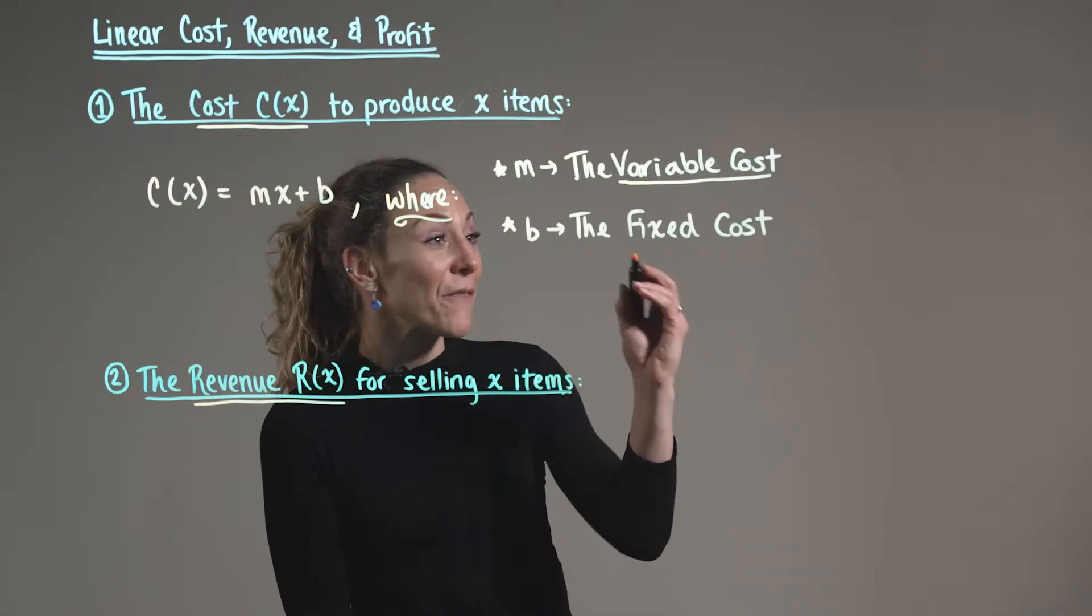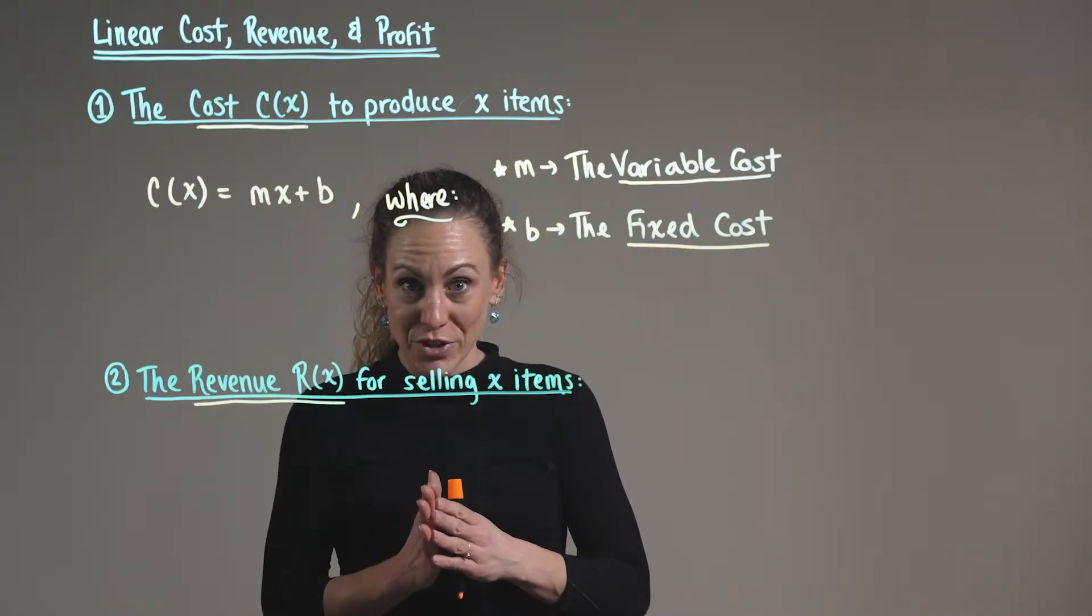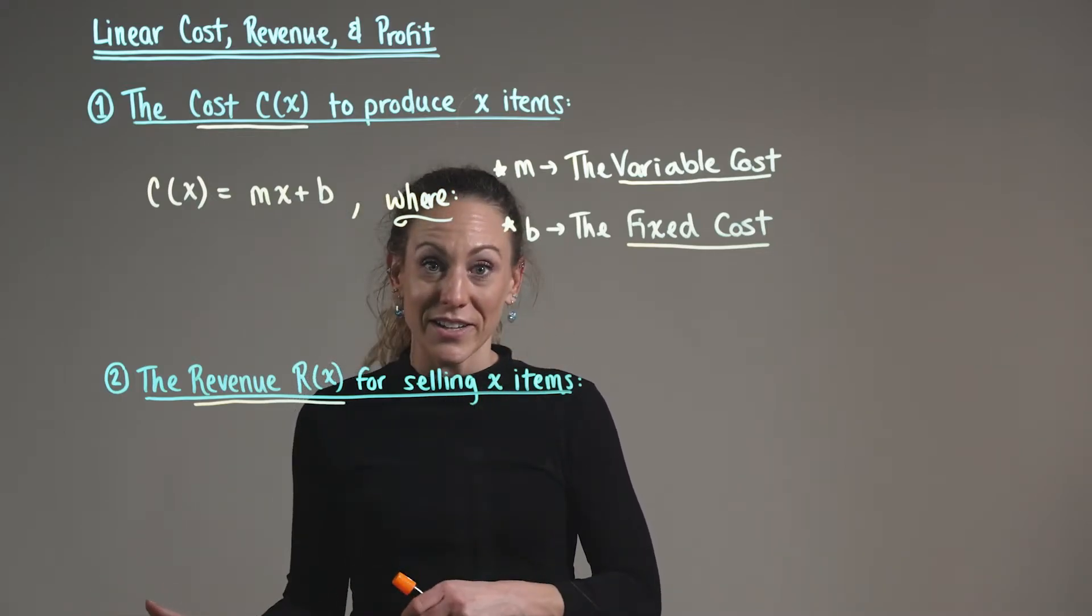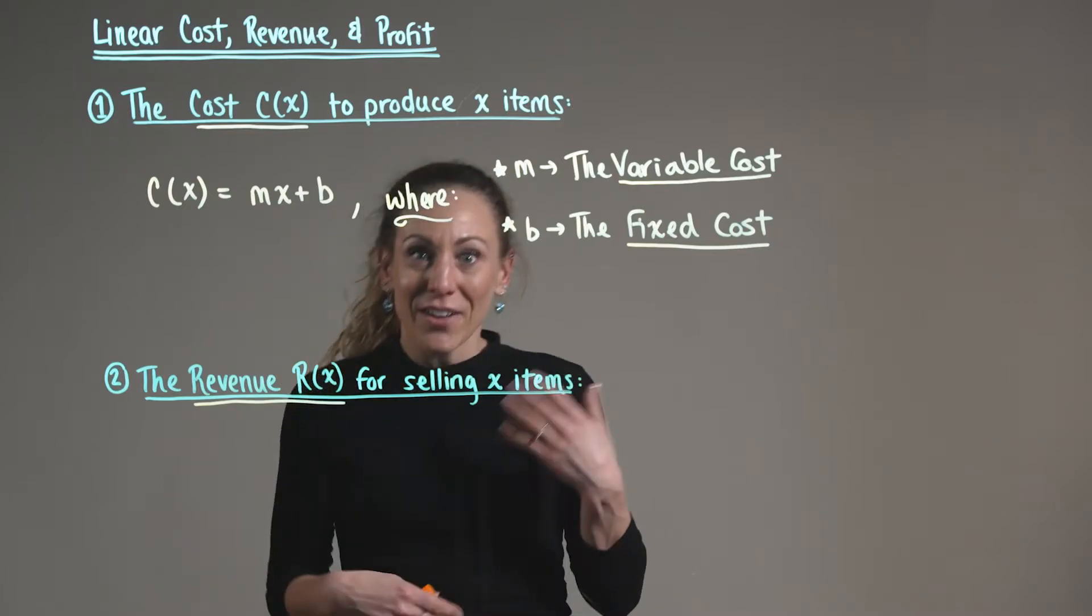Whereas when we talk about fixed costs, we're talking about costs for production that happen regardless of production, such as utilities, electricity, and rent.